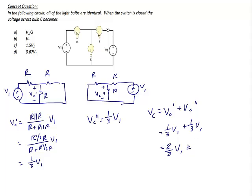That equals 2/3 V1, which can also be written as approximately 0.67 V1. Therefore, when the switch closes, the voltage across bulb C becomes 2/3 V1, so the answer is letter D.